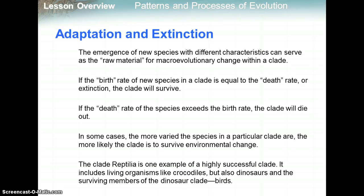The emergence of new species with different characteristics can serve as raw material for macroevolutionary change — meaning big change — within a clade. A clade is like a group of related organisms or species. If the birth rate of a new species in a clade equals the death rate, the clade will survive. However, if the death rate exceeds the birth rate, the clade will eventually die out. The more varied the species in a clade, the more likely it is to survive environmental change. The clade Reptilia is one example of a highly successful clade — it includes crocodiles, dinosaurs, and the surviving members of the dinosaur clade: the birds.